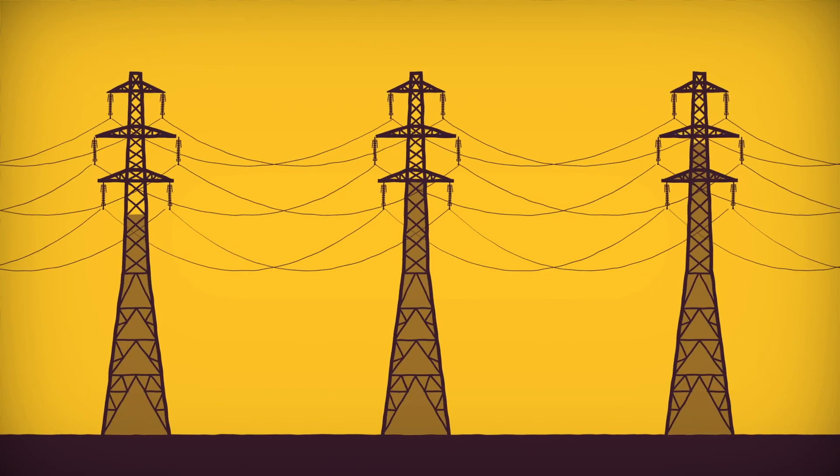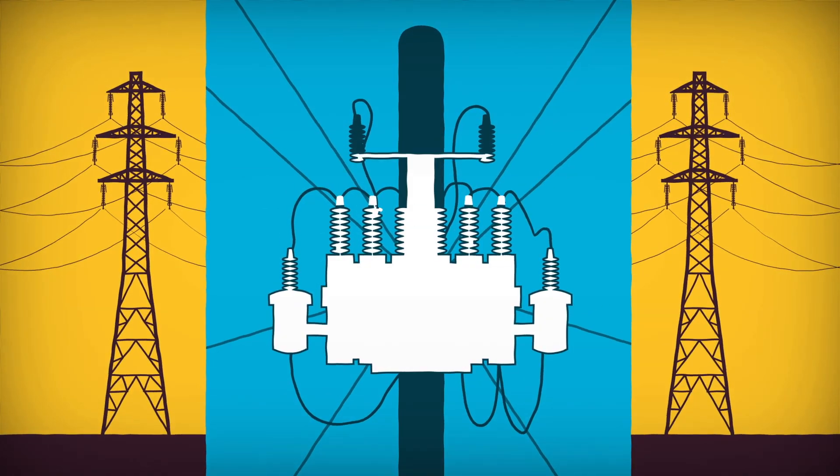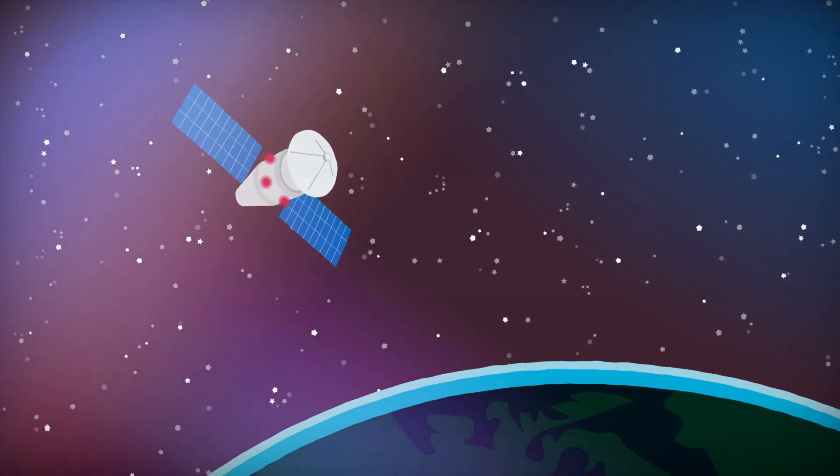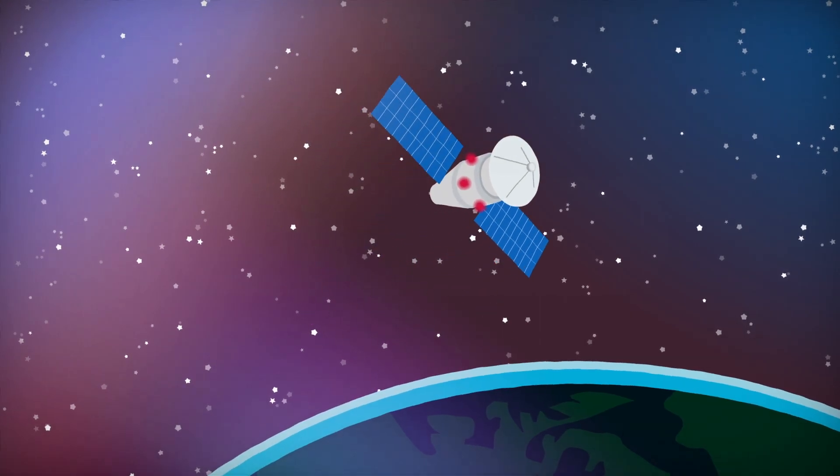Power grids can be shut off in advance of a solar storm, while capacitors can be installed to absorb the sudden influx of energy. Many modern satellites and spacecraft are equipped with special shielding to absorb the impact of a solar storm.